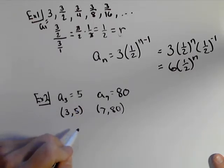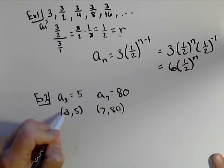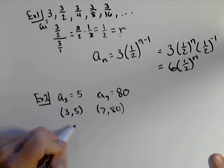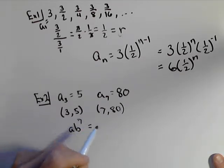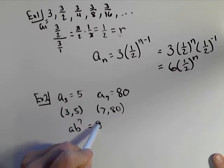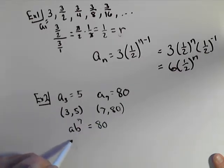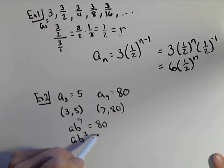So we know that when the exponent n is three, a times b to the power of three should be getting five. And when n is seven, we should be getting eighty.